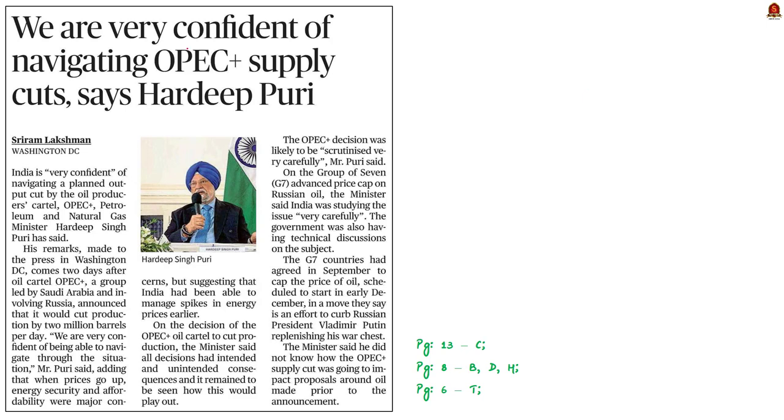Take a look at this news article. It talks about organization of the petroleum exporting countries. We shortly call this as OPEC+. Recently OPEC plus has announced that it would cut oil production by 2 million barrels per day. The news article here speaks about India's preparedness over the prevalent situation. In this context, let us learn about the two oil producing cartels, OPEC and OPEC plus.